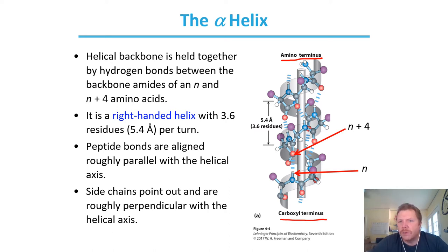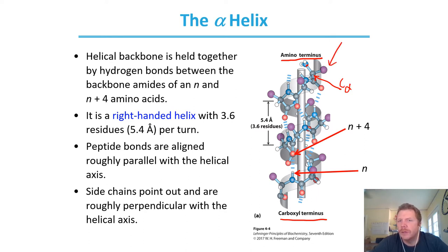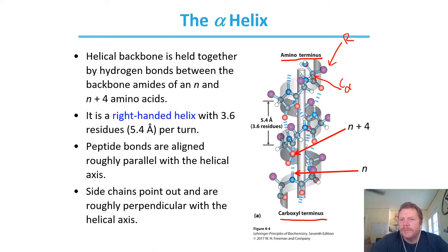We've got a couple of atoms to recognize. The blue sphere is going to be our nitrogen — that's our amino terminus. Then we've got the alpha carbon. The purple ball is going to be your R group. So we've got our alpha carbon, then our carboxy carbon, then another N terminus, alpha carbon, carboxy terminus.